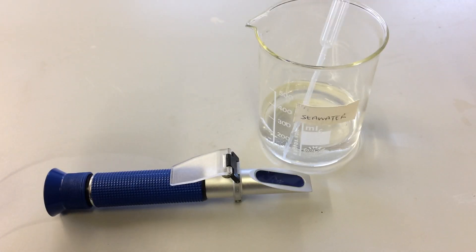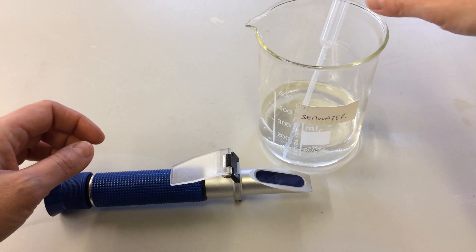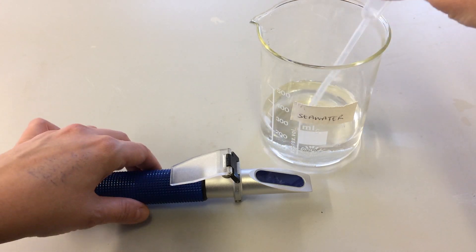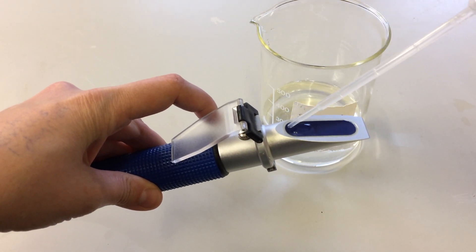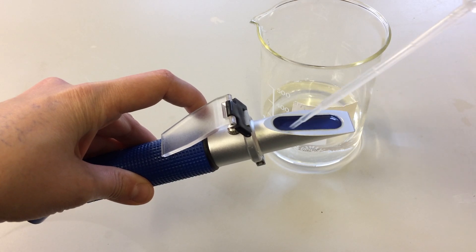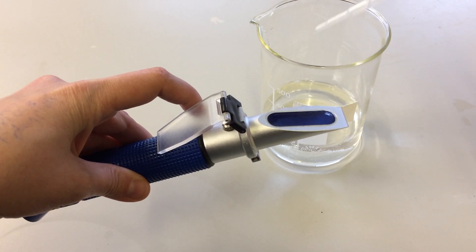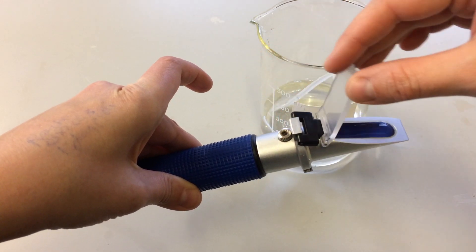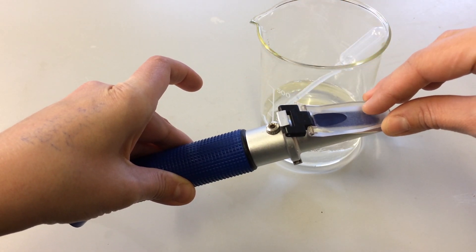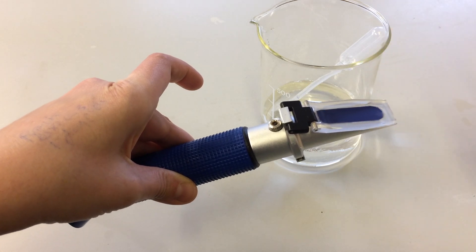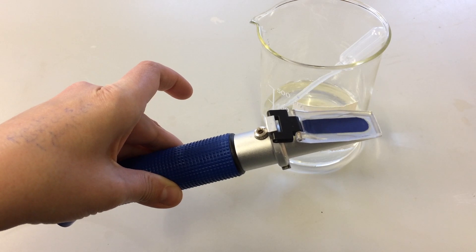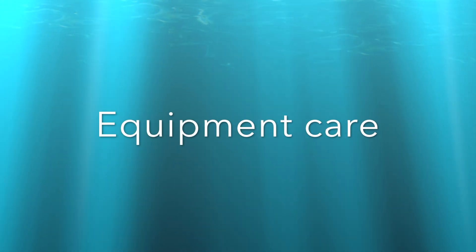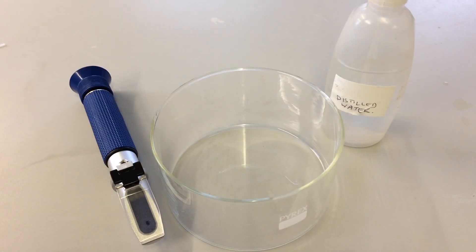You've now calibrated your refractometer and you're ready to measure the salinity levels in your seawater sample, which we have here. Simply using a clean pipette, repeat the process that you did before, ensuring that your sample is cleanly on this measurement glass section on the refractometer and ensuring that you don't have any air bubbles underneath here. Then you're ready to measure your salinity levels of your sample.